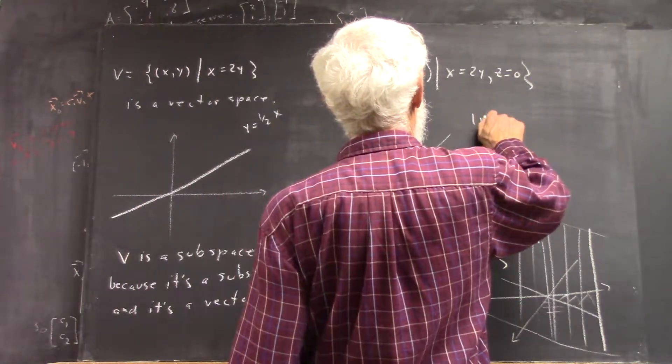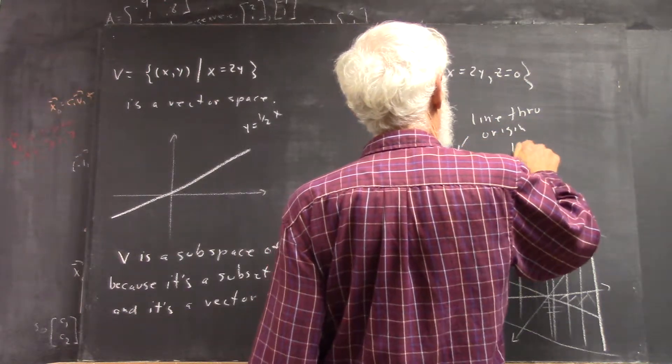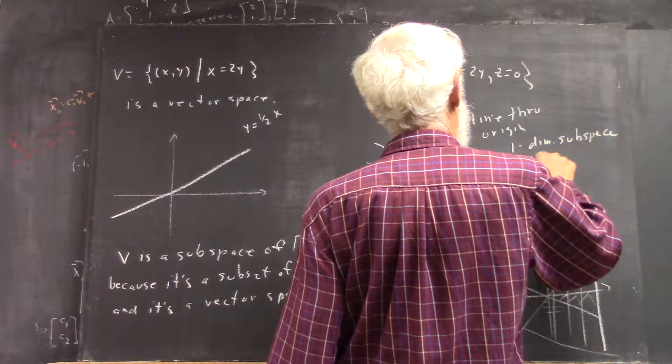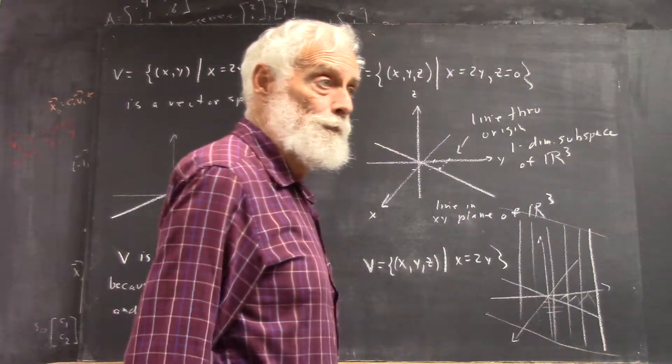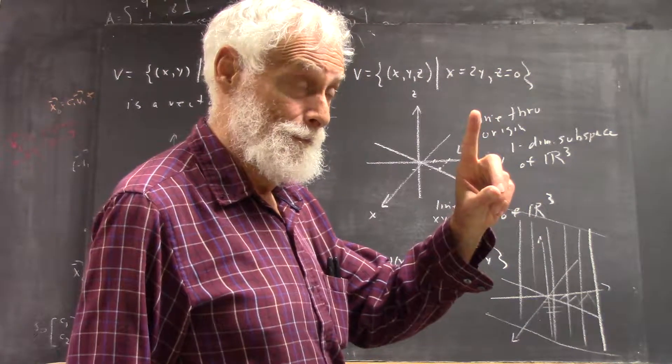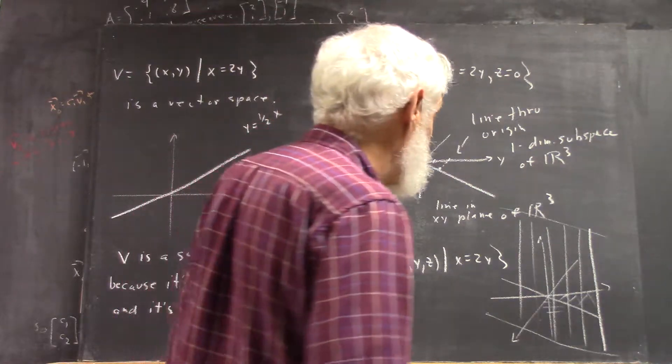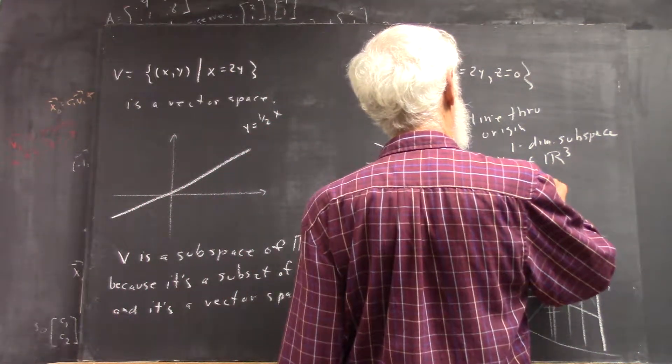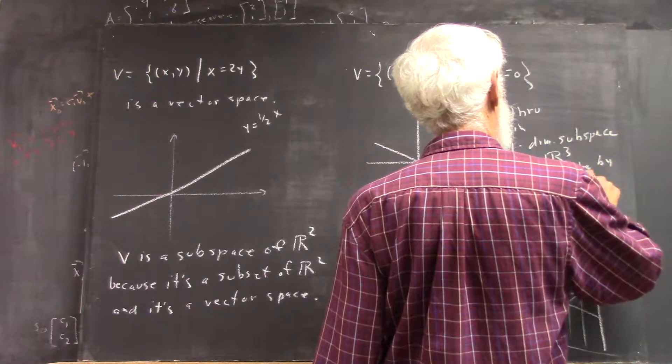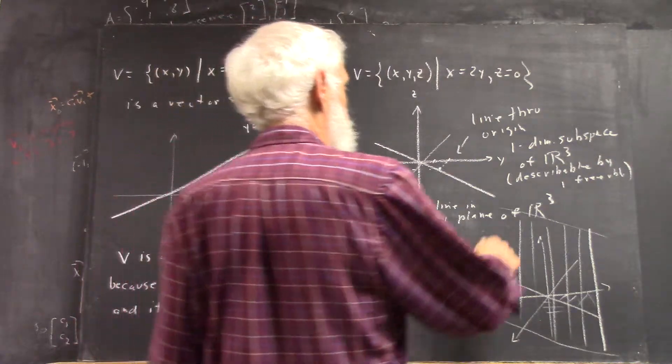So this is a line through the origin, and it's a one-dimensional subspace of R3. It's one-dimensional because it can be described by one free variable. And for another reason, which we'll get to probably next class, related to this thing called basis. It's describable by one free variable.